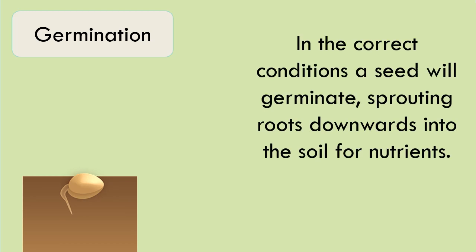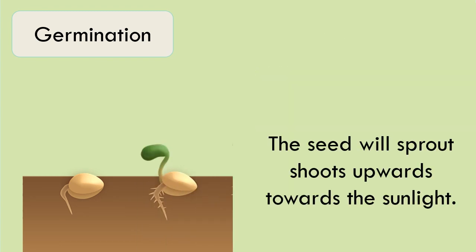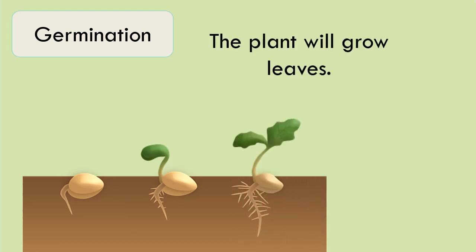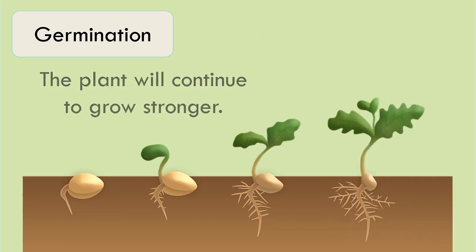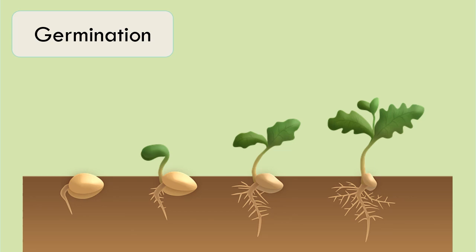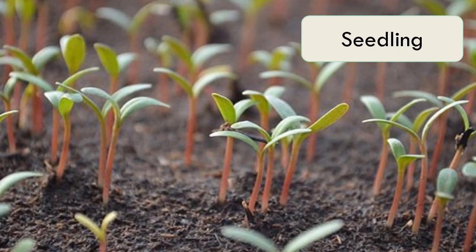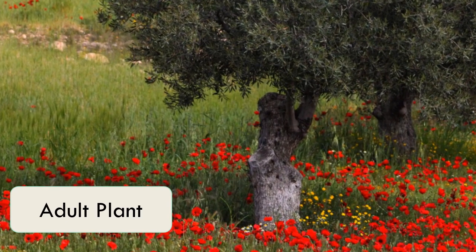In the right conditions the seed will germinate, sprouting roots downwards into the soil. The seed will sprout shoots upwards towards the sunlight. The plant will begin to grow leaves and will continue to grow stronger. The beginning stage of a plant's growth is known as a seedling, and then the plant will continue to grow into an adult plant.